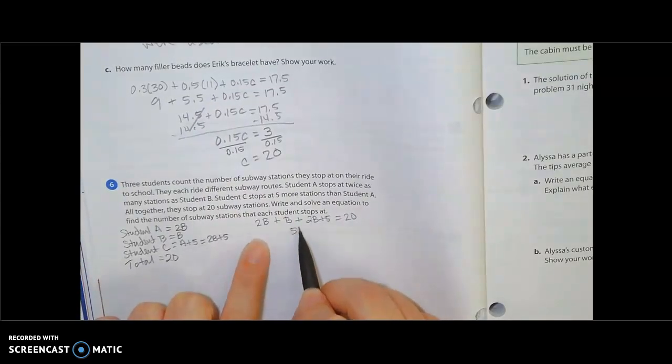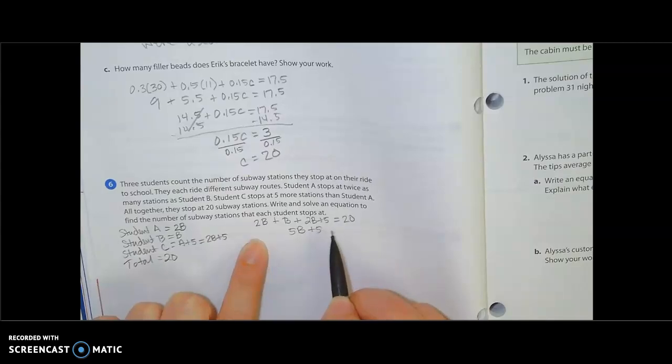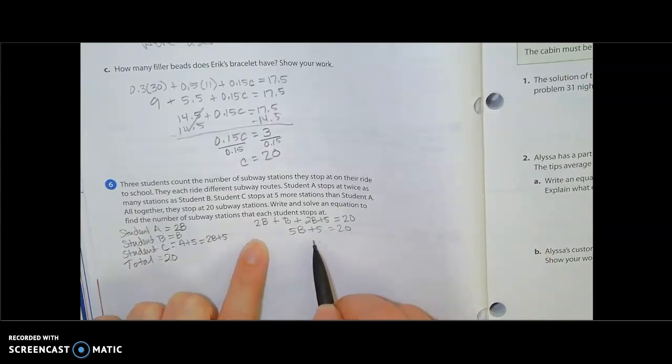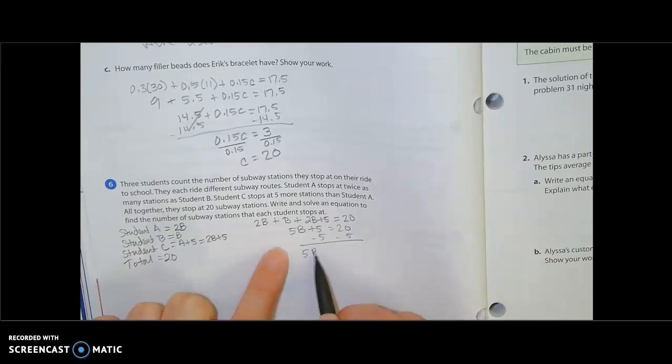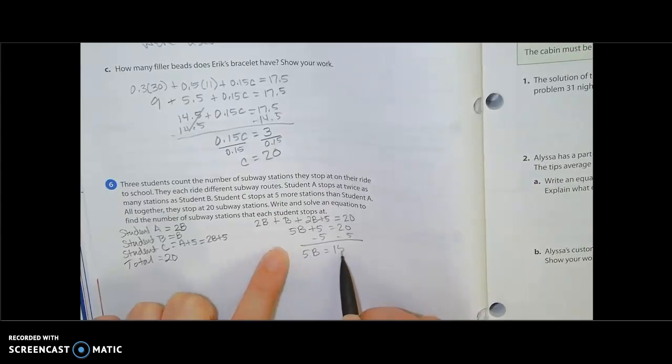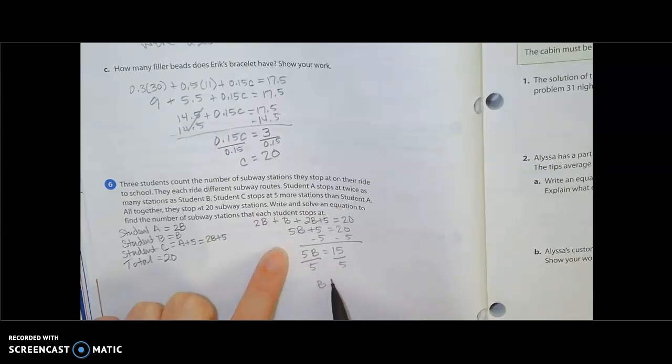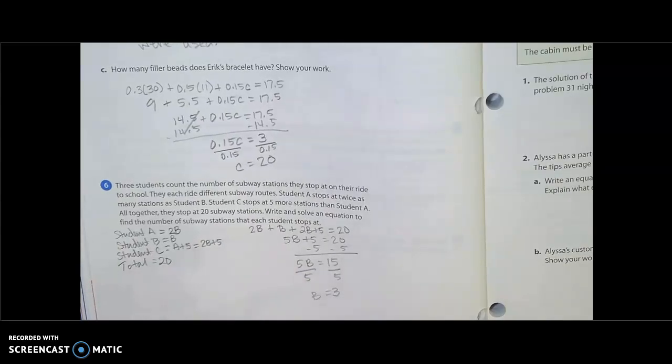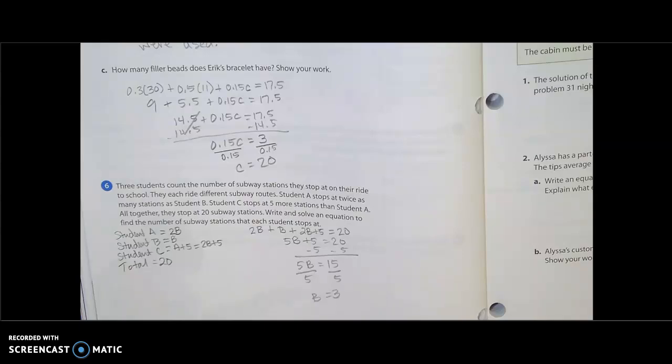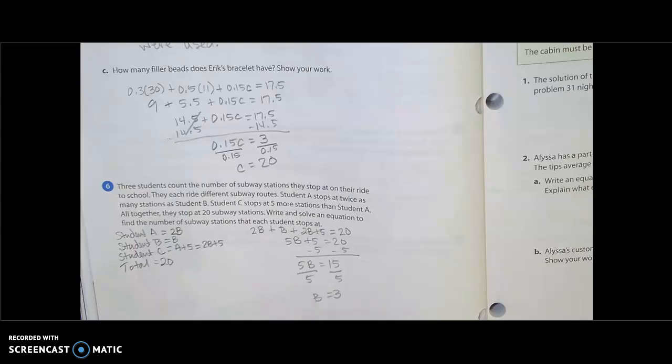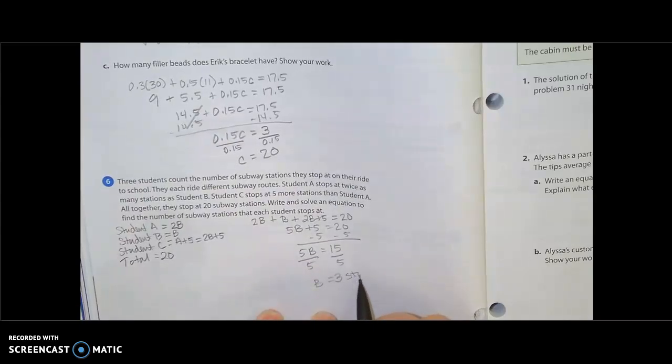Combine like terms. That's 4, 5. 5B plus 5 equals 20. Subtract the 5 away. 5B equals 15. Divide by 5. B equals 3. So student B, and then it says write and solve the equation to find the number of subway stations each student stops at. So B equals 3, so that means student B stops at 3.